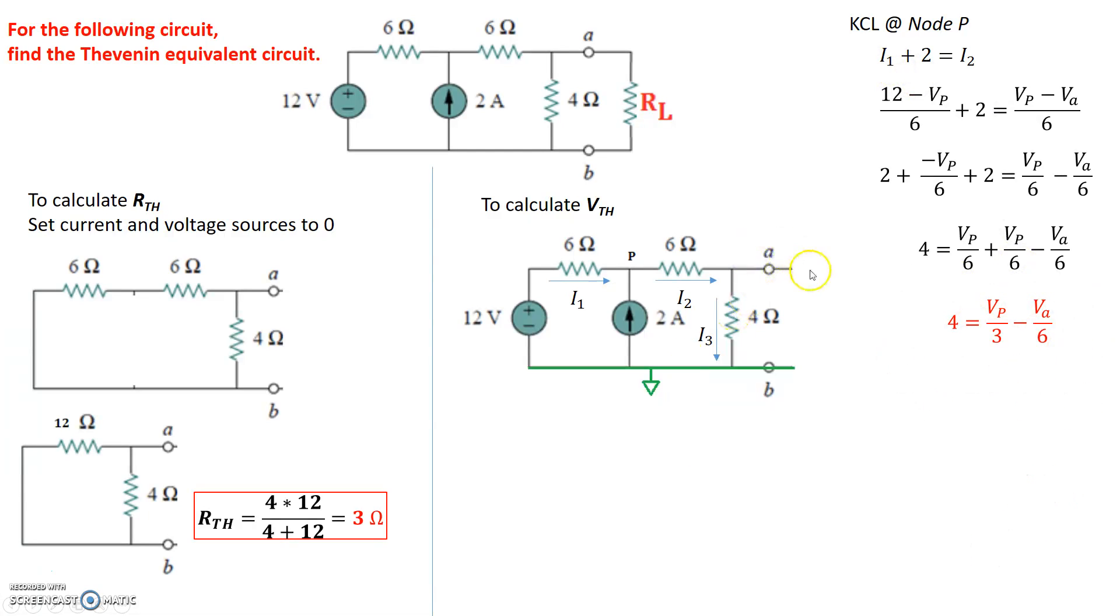Now, let's find an expression based on analysis at node A. If we do Kirchhoff's current law at node A, we said the current going in is I2 into A, current coming out of A is I3, so I2 equals I3. I2 is Vp minus Va divided by 6. I3 is Va minus reference divided by 4, so we can write that as Vp minus Va divided by 6 equals Va over 4. Collecting all the terms together, we get the following expression. We have two expressions, two unknowns.